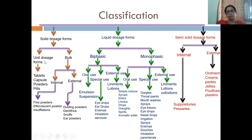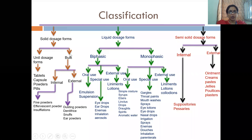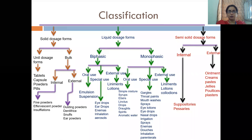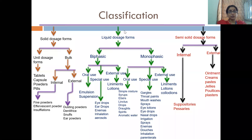In solid dosage form, unit dosage form examples are tablets, capsules, powders, and pills. The powder can also come in bulk, so this dosage form can overlap depending on how and where it is administered. Bulk means the whole quantity — not made as single doses. For example, syrup comes in a container from which you have to take 5 ml each time — that is bulk. So in bulk, we have internal and external dosage forms.